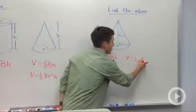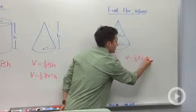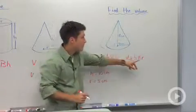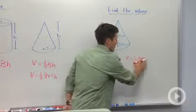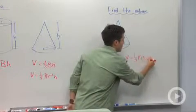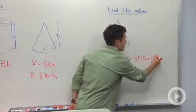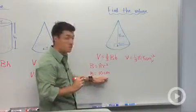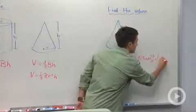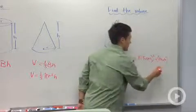So we're going to say one-third times pi times our radius. Now instead of writing radius, I'm going to substitute in five centimeters. So I'm going to erase that and write five centimeters, and we're going to square that. And we need to multiply by our height, and our height is ten centimeters, so we're going to say times ten centimeters.